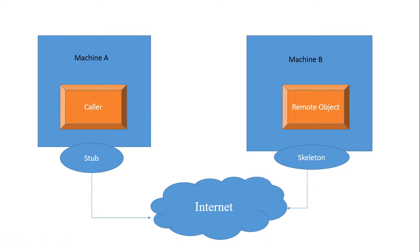The packet can contain an identification number, remote object reference, method name, and parameters. It gets marshaled and sent over the network. The skeleton receives the information, identifies which method to call, unpacks the parameters, and calls the method. The server's result is sent back via the skeleton to the network, then to the stub, and returned to the client.